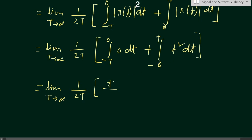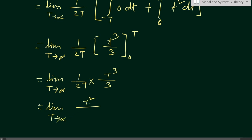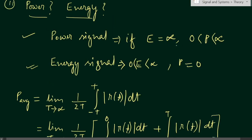For the positive half, we integrate t² from 0 to T, which gives t³/3 evaluated from 0 to T. So we get (1/2T) × (T³/3) = T²/6. Taking the limit as T tends to infinity, T²/6 tends to infinity. Therefore, average power equals infinity.